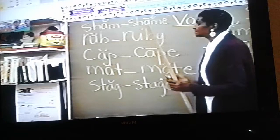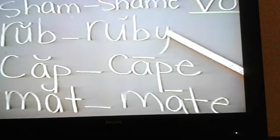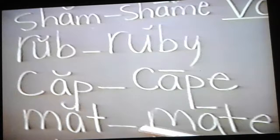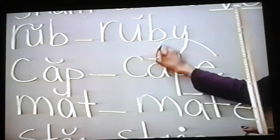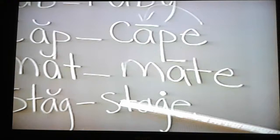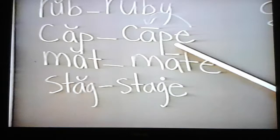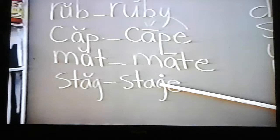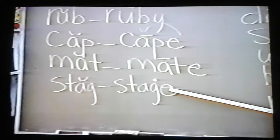Sham and shame. The vowel signal E hits a vowel before it and makes it say its name. Rob and groovy. The vowel signal Y hits a vowel before it and makes it say its name. Cap and cape. The vowel signal E hits a vowel before it and makes it say its name. Mat and mate. Vowel signal E hits a vowel before it and makes it say its name. Stag and stage. The vowel signal E changes G to J.